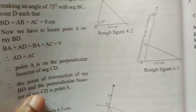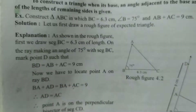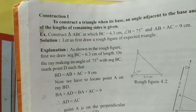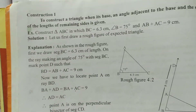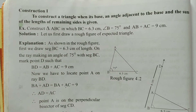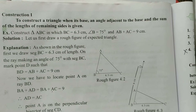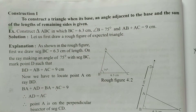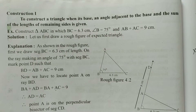We come to the first construction. Turn to page number 52 of your textbook. Construction 1 — look into your textbooks, page number 52. The first construction: to construct a triangle when its base, an angle adjacent to the base, and the sum of the lengths of the remaining sides is given. So we are going to learn how to do this construction.